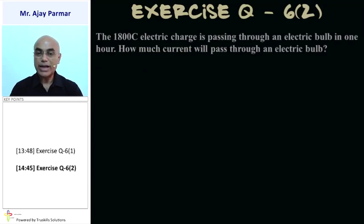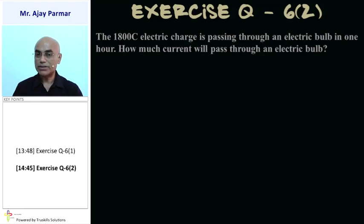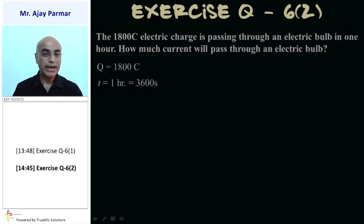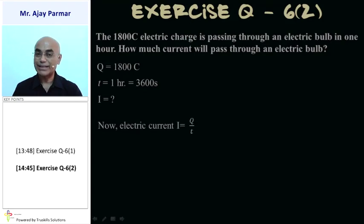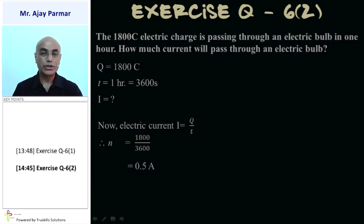Numerical 4: 1800 Coulomb of electric charge passes through an electric bulb in 1 hour — how much current is passing? Given: Q = 1800 C, T = 1 hour = 3600 s. I = Q/T = 1800/3600 = 0.5 Ampere.